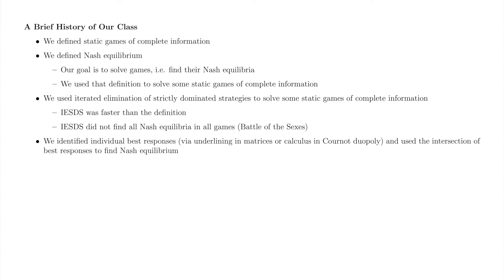So, we came up with another method, and used the intersection of individual best responses to find mutual best responses, i.e. Nash equilibrium. This method captured more Nash equilibria than iterated elimination, but there were still some games out there where even underlining did not seem to find a Nash equilibrium. Did those games even have Nash equilibria?